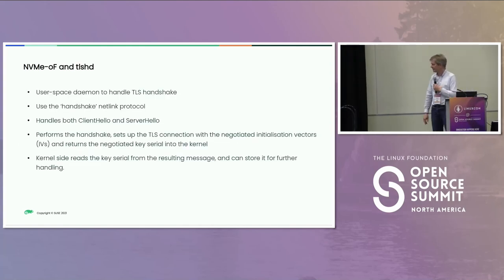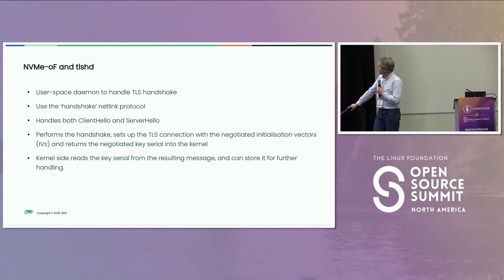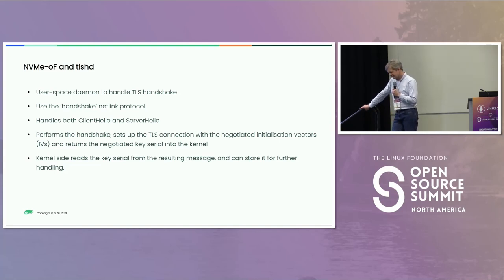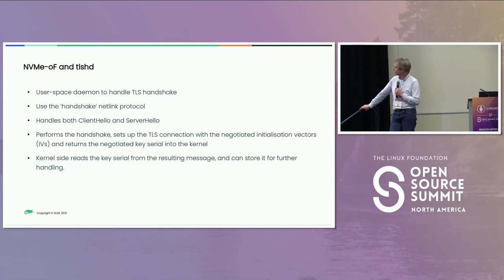The entire TLS handshake is done by the TLS handshake daemon (tlshd), a GitHub project. It receives the socket via the netlink protocol, executes the client hello or server hello depending on which side it's on, sets up the TLS connection, does the handshake, and pushes the negotiated IVs into the kernel to configure the socket for TLS. Once done, it passes control back to the kernel driver.